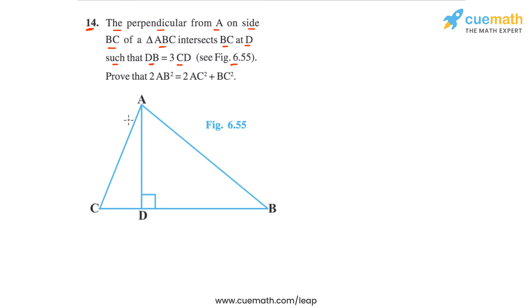Observe this figure carefully. From the point A, from vertex A, perpendicular AD is dropped onto BC such that DB is equal to 3CD. So this segment DB is equal to thrice of this segment CD. Let's write this given fact: DB is equal to 3 times CD.